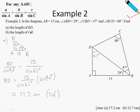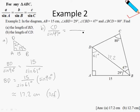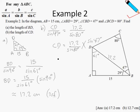For part (b), we find the length of CD. Using the BD value of 17.2 we just found, write the sine rule for triangle BCD: CD over sine of 47 degrees equals 17.2 over sine of 80 degrees. So CD equals 17.2 over sine 80 multiplied by sine 47. Press this in your calculator and you get 12.7 centimetres to 3 significant figures.